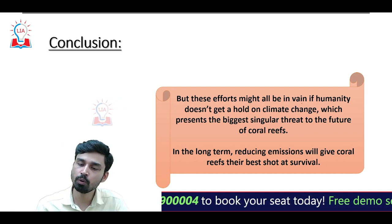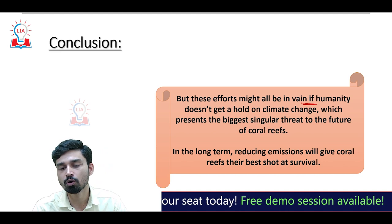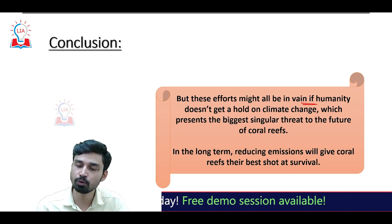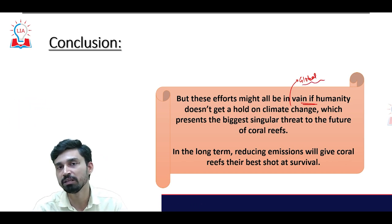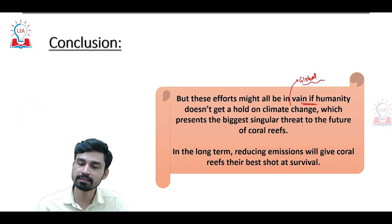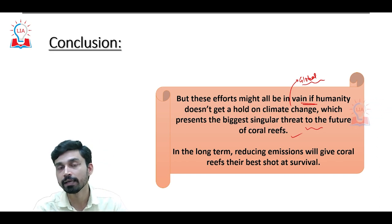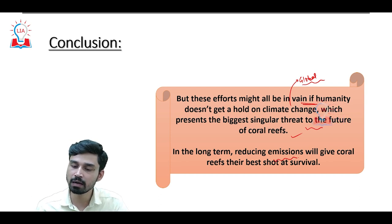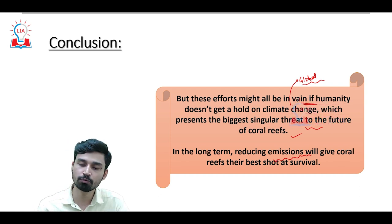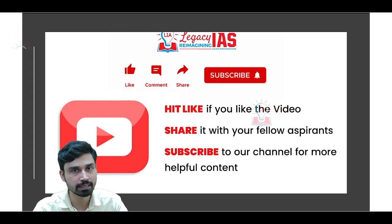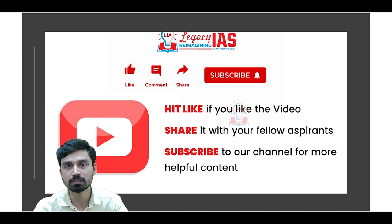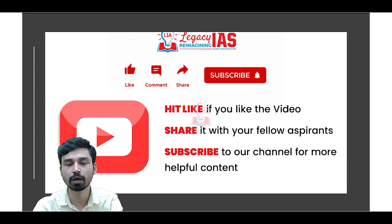In conclusion, all these efforts may go in vain if humanity does not get a hold on climate change. As mentioned earlier, global warming is the biggest culprit causing stress among corals, leading to coral bleaching and death. It is a singular threat to the future of coral reefs. In the long term, if we want to protect and preserve coral reefs, we have to reduce greenhouse gas emissions — that will give coral reefs the best shot at survival. If you liked the video, please hit the like button, share it with fellow aspirants, and subscribe to our channel for more content. Thank you.